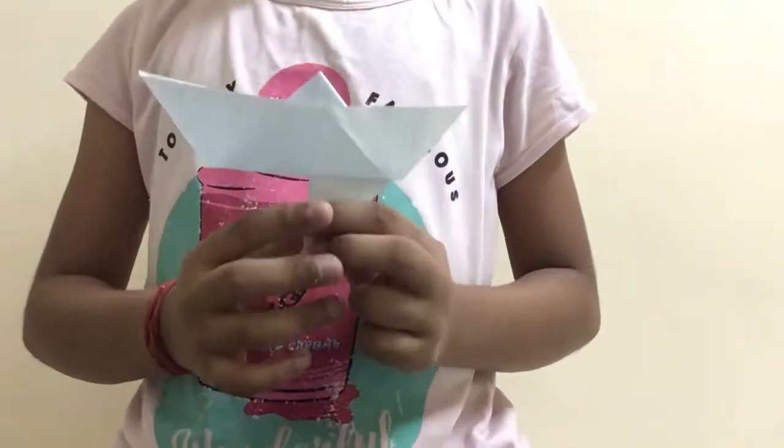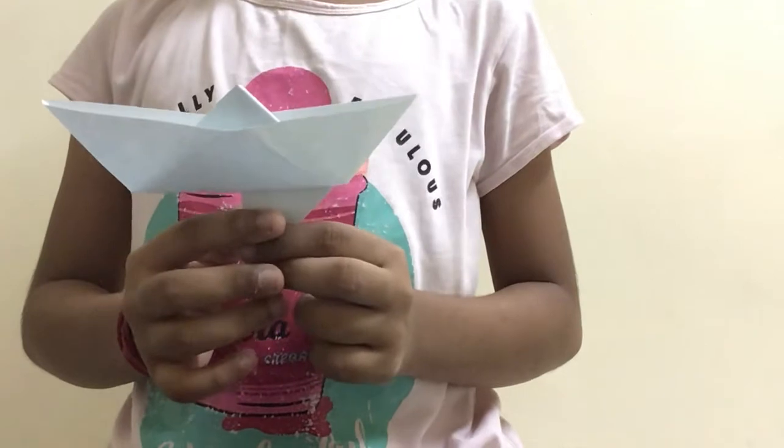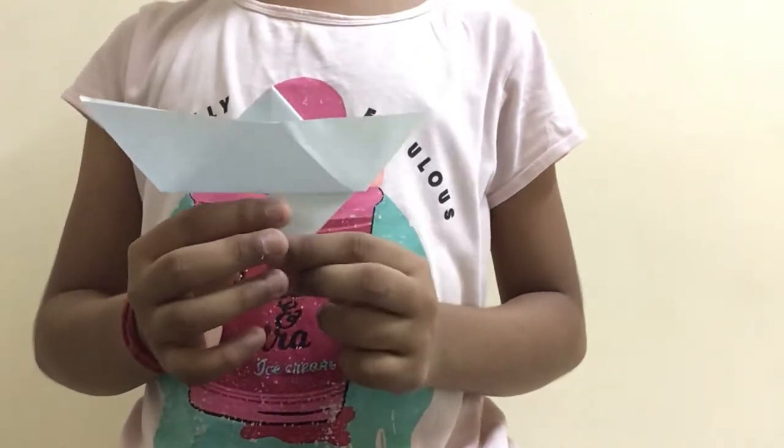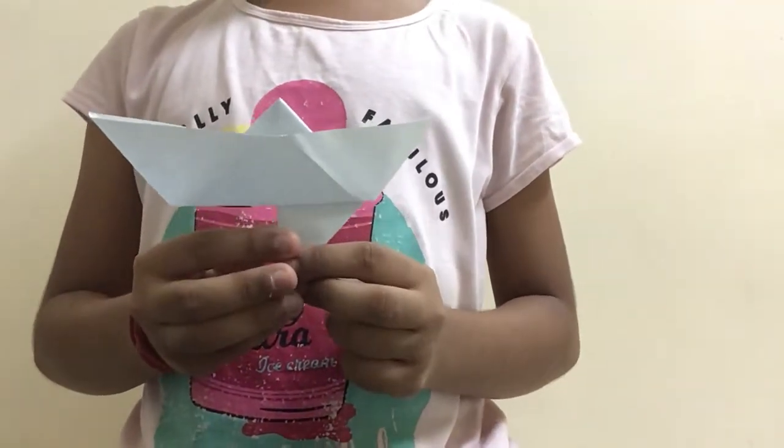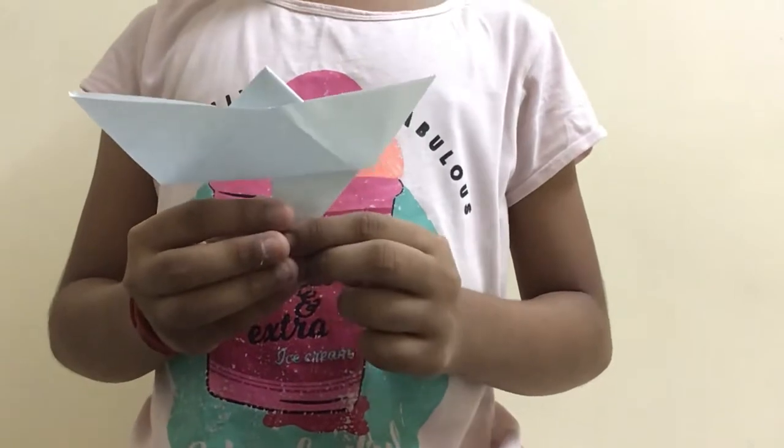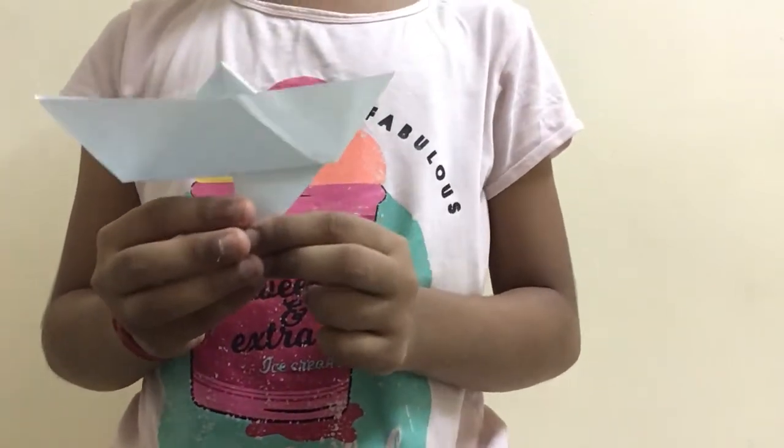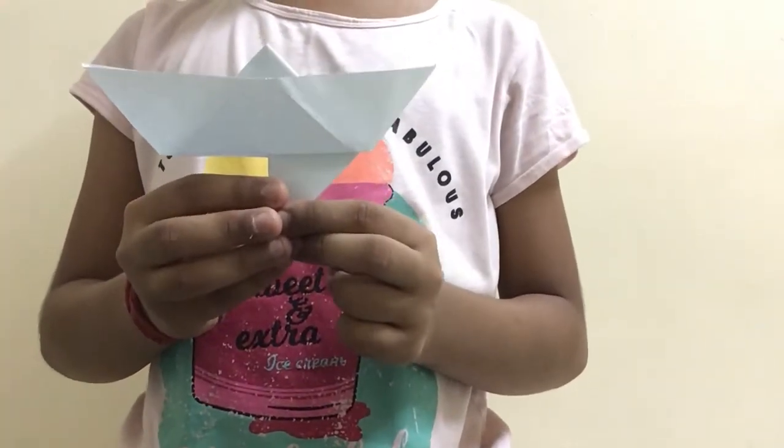Hi guys, welcome back to Crafty Kids. In this video we'll be seeing how to make a paper boat with a rudder. In Tamil we call this a kati couple, so this is a very easy way of making a paper boat with a rudder and it is useful too.